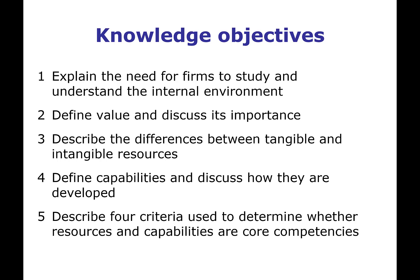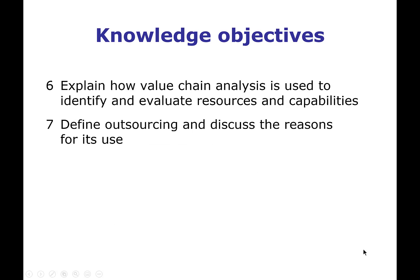Our objectives are to explain the need for firms to study and understand the internal environment; define value and discuss its importance; describe the differences between tangible and intangible resources; define capabilities and discuss how they are developed; describe the four criteria used to determine whether resources and capabilities are core competencies; explain how value chain analysis is used to identify and evaluate resources and capabilities; and finally to discuss outsourcing and its use to improve performance by focusing on core competencies.